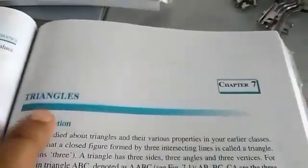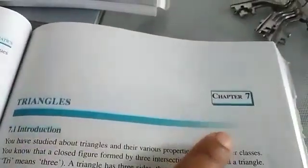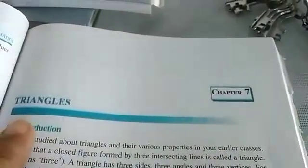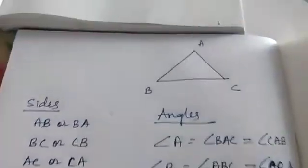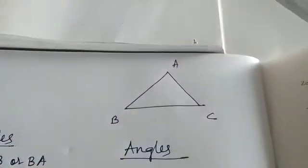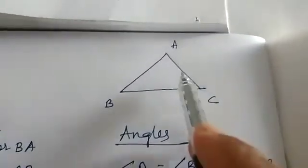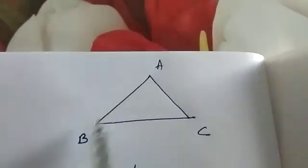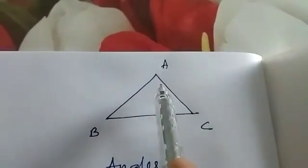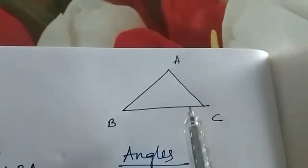Chapter 7: Triangle. Let's have an introduction for this triangle. Now what is a triangle? A closed figure or a polygon with three sides is called a triangle.